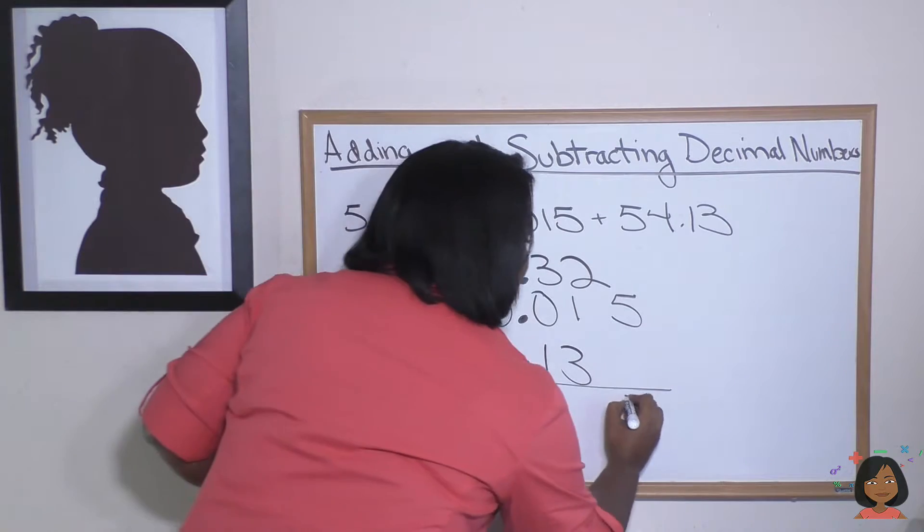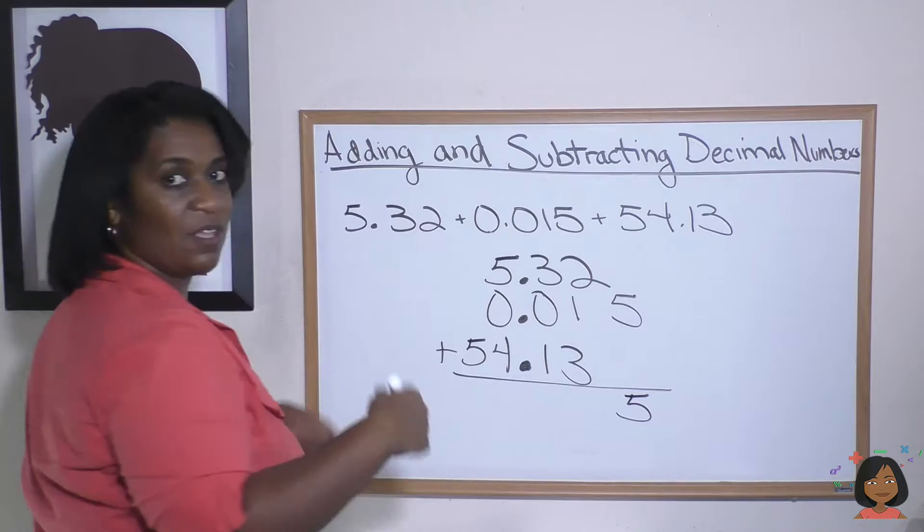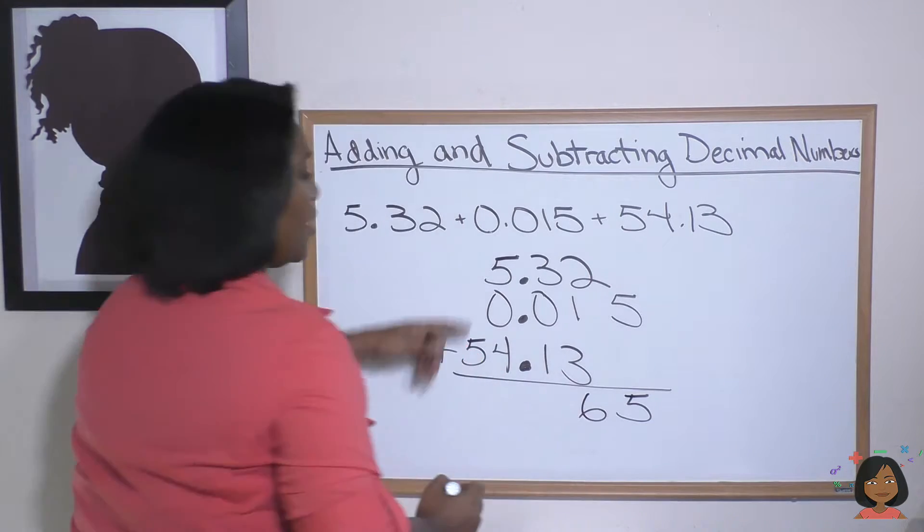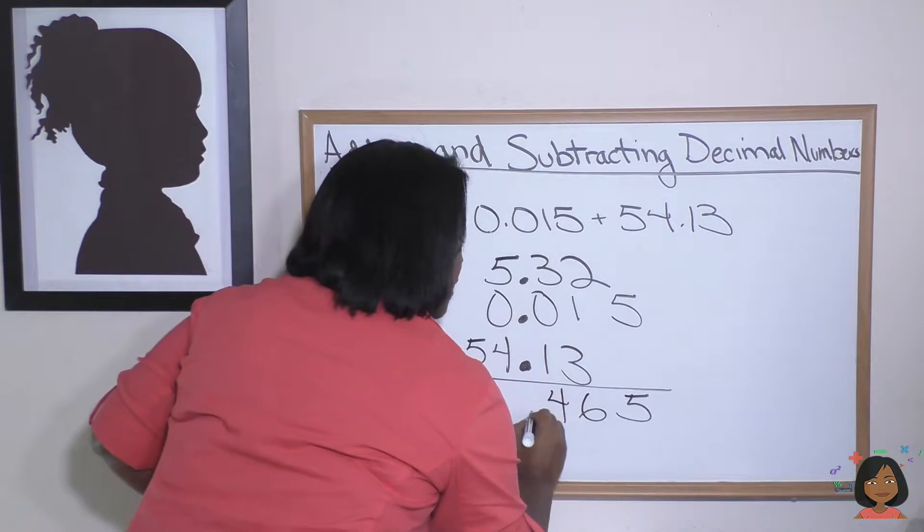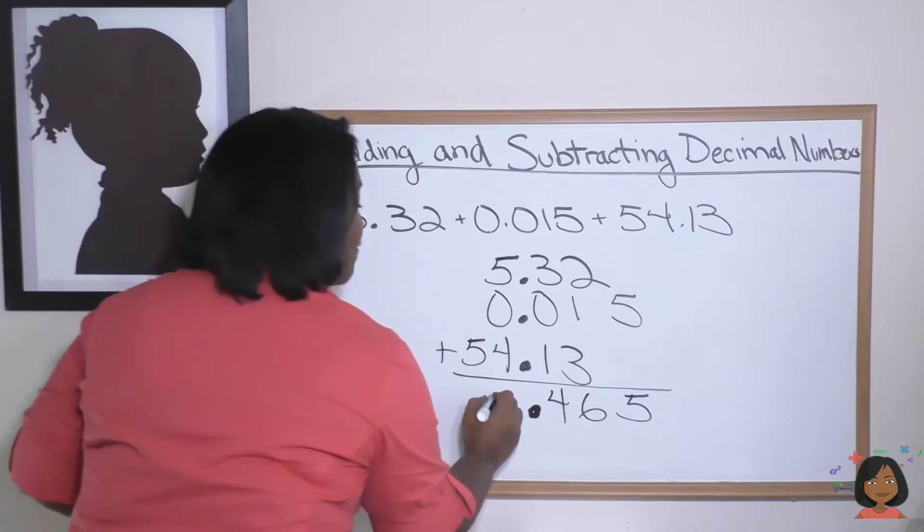Now let's add the rest. Two plus one is three, three plus three is six, three plus one is four. Boom, there's my decimal. I keep them all lined up. Five and four is nine, and five...